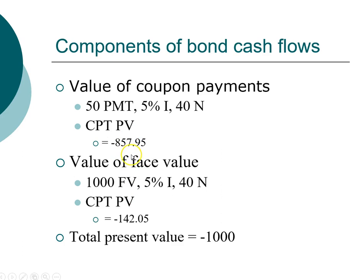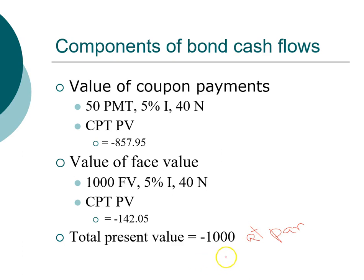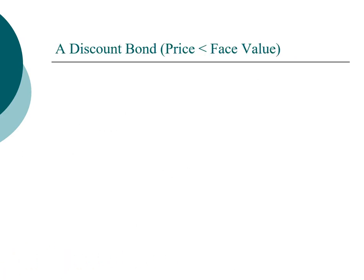When the bond's price — the present value — is exactly equal to the face value, this is a bond selling at par. This is a special situation and it only occurs when the coupon rate equals the yield to maturity. We'll now look at what happens when the interest rate changes and the coupon rate is no longer equal to the market interest rate, and how that affects the bond's price.